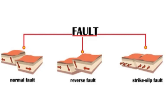There are several different types of faults, including normal faults, reverse faults, and strike-slip faults. In a normal fault, rocks on one side of the fracture move downward relative to the rocks on the other side. This can occur when the earth's crust is being stretched, such as along a divergent plate boundary.